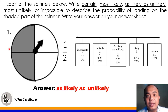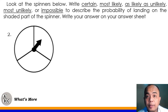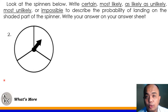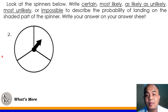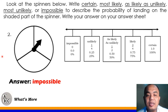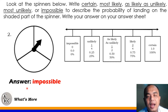Let's have number 2. Our spinner is divided into three parts. Now, what have you observed in our spinner here? There is no shading on our spinner in number 2. If you were asked — when the pointer spins, is there a possibility that it will land on the shaded part? Of course not. There is no shaded part on the spinner. So the answer for number 2 is impossible — zero. Since there is no shaded part on the spinner, it is impossible for our pointer to land on a shaded part.